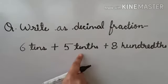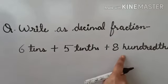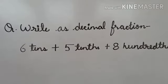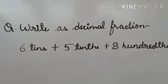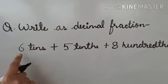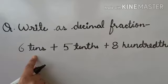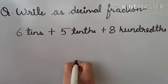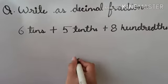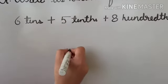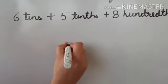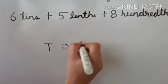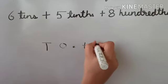Here 6 tens plus 5 tenths plus 8 hundredths. Here we have tens as the largest place of the number. First of all we mark the decimal, and places of integral part like ones and tens.